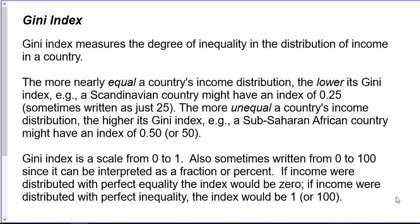For example, a Scandinavian country might have an index of 0.25 or sometimes written as just 25. And the more unequal a country's income distribution, the higher its Gini index. For example, a sub-Saharan African country might have an index of 0.50 or just 50.